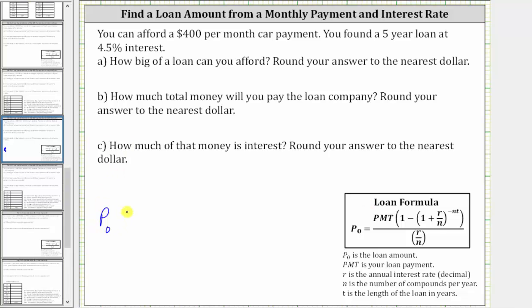the maximum loan you can afford, equal to the quotient on the right, where in the numerator we have PMT, which is the loan payment you can afford, which is $400 per month. This gives us 400 times the quantity one minus, and in parentheses, one plus R divided by N raised to the power of negative NT,